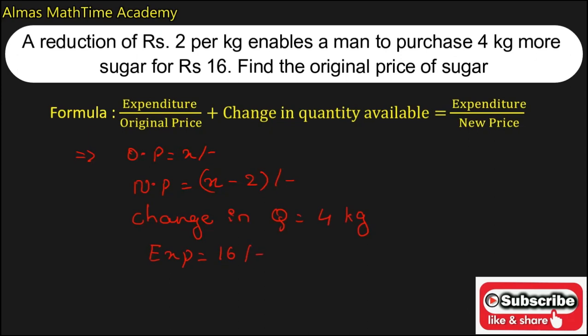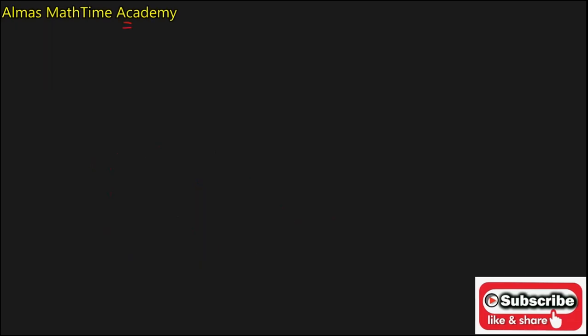Now we have to find the original price of sugar. To find the original price of sugar this formula will be using. Now substitute these all values in the formula and find the value. Now the value of expenditure is equal to 16 upon original price is equal to x plus change in quantity is equal to 4. E is equal to expenditure 16 upon new value, E is equal to x minus 2.